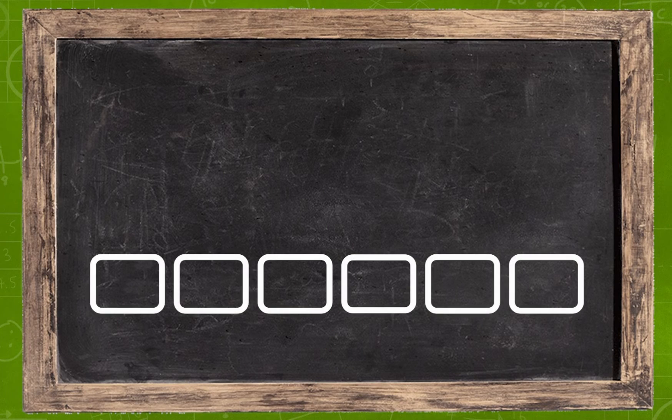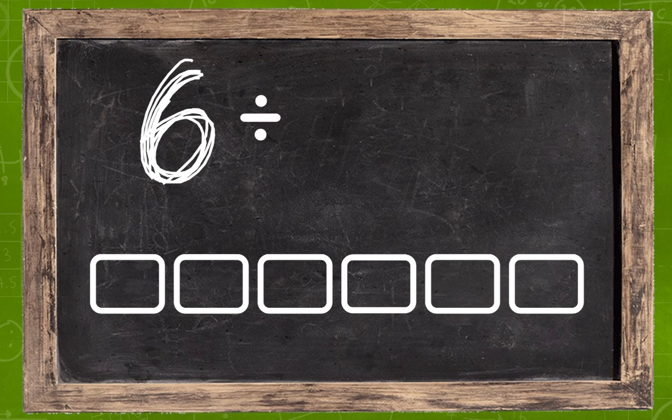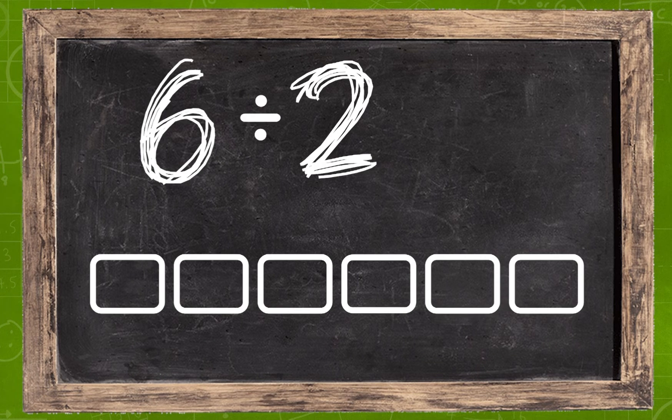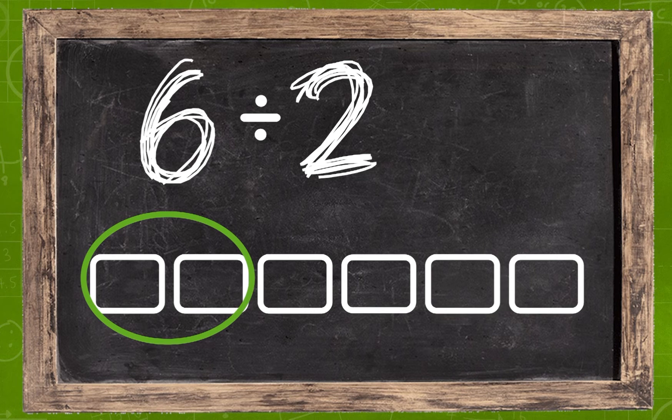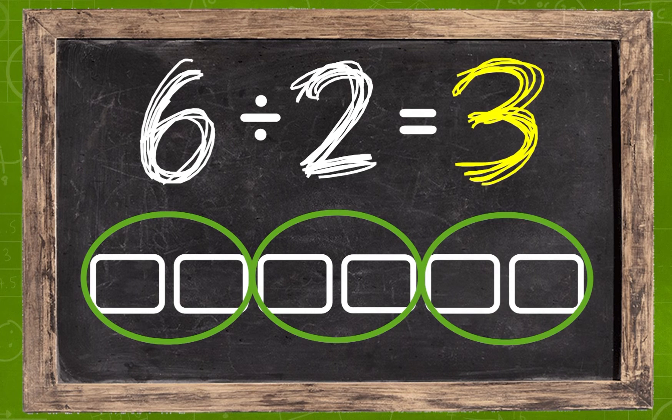Imagine you have a chocolate bar with 6 pieces. How could you use the chocolate bar to show how you would divide 6 by 2? You might decide to divide the chocolate bar into parts of size 2. So you would get 3 parts of size 2.